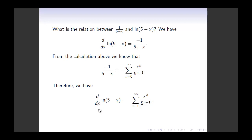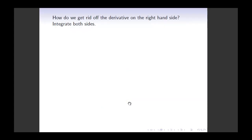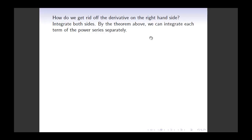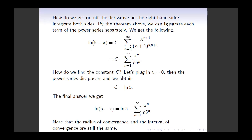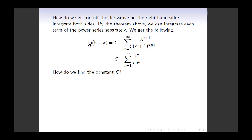In the original problem I don't want the derivative, so I integrate both sides to get rid of it. By the theorem, I can integrate each term inside the sigma notation separately. Integrating gives ln of 5 minus x equals negative summation of x to the power n plus 1 over (n plus 1) times 5 to the power n plus 1, plus the arbitrary constant c. When I shift the index (replacing n plus 1 by n and starting the summation from 1), the power series looks a bit nicer, but I still need to find the constant c.